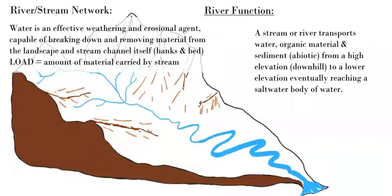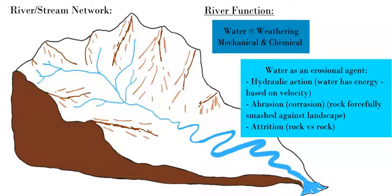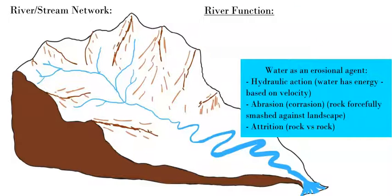As the water moves, both erosion and weathering happen simultaneously — water is a fantastic erosional agent with both mechanical and chemical weathering qualities. Erosional processes include abrasion (corrasion), hydraulic action, and attrition. Hydraulic action is the force of water hitting against the riverbed or riverbanks. Attrition is rocks colliding against each other, getting smoother. Abrasion uses rocks to smash against the sides of the river — the bank or riverbed — to remove and take away material.